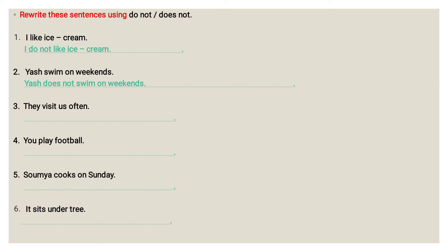Third: 'They visit us often.' — 'they' takes 'do not,' so the answer is 'They do not visit us often.' Now for sentences four, five and six, you have to do it yourselves.